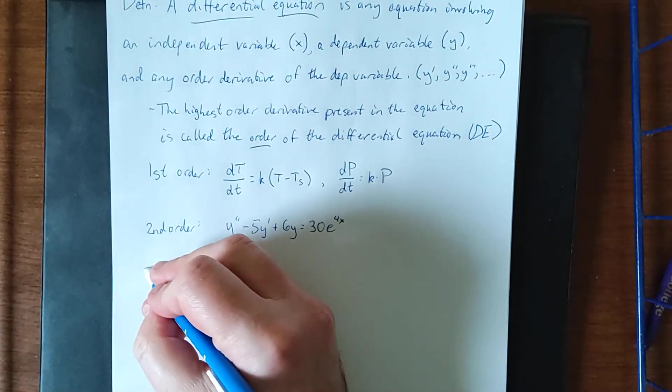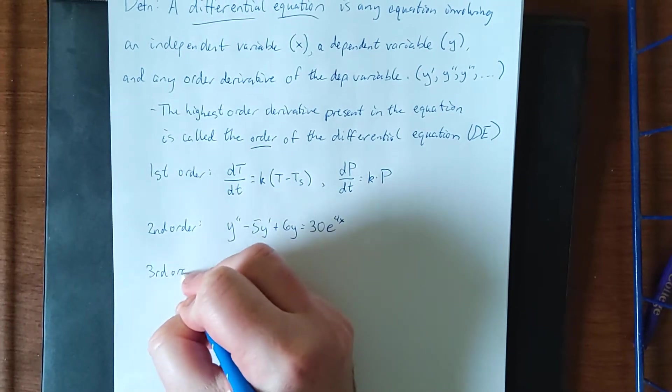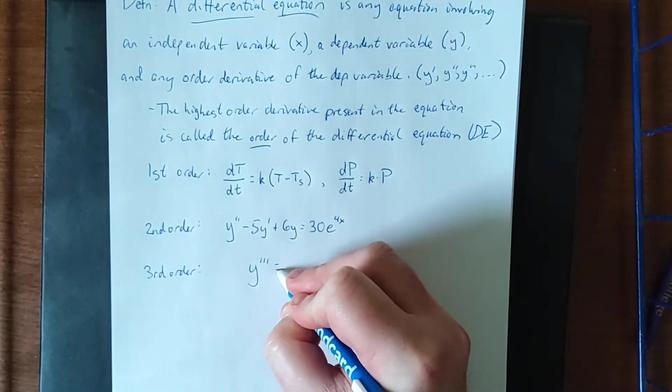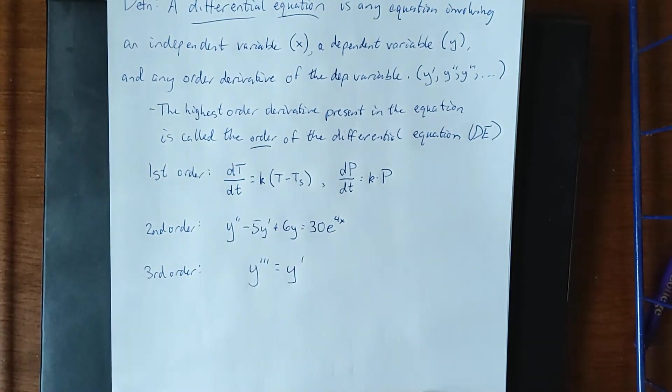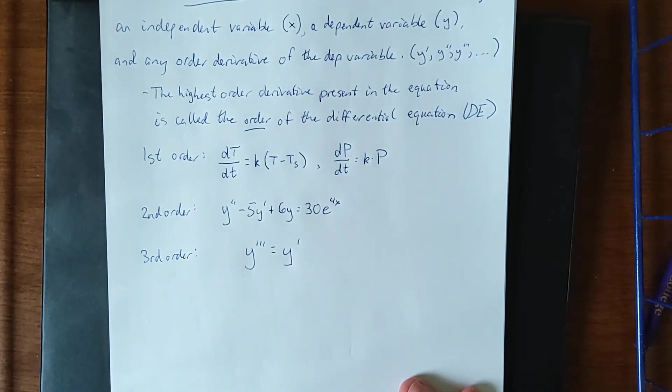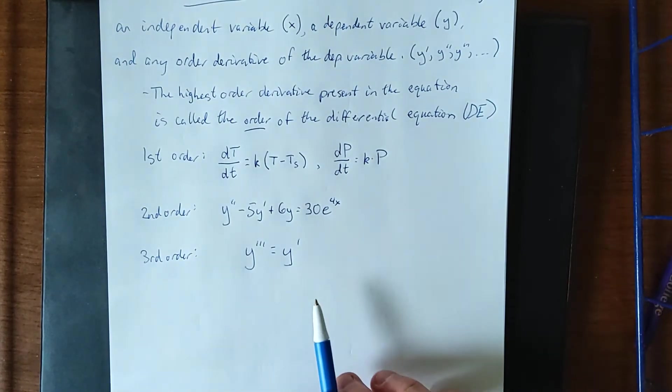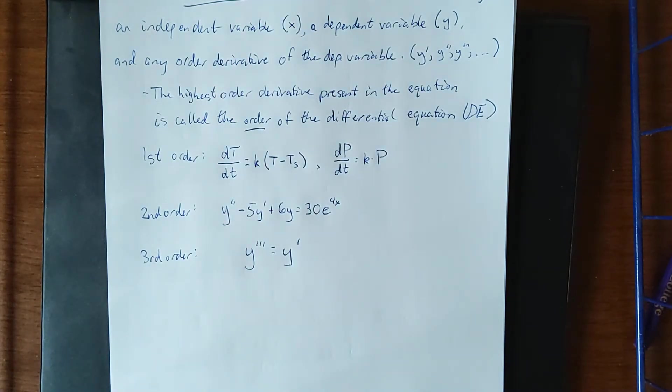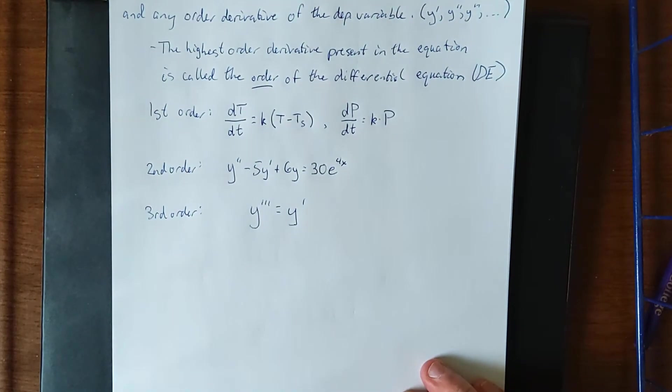Now if you wanted to go ridiculous and go with something that is a third-order differential equation, we could just do something simple like saying that the third derivative of a function is equal to the first derivative of a function. So a couple things that would satisfy that: exponentials, constant functions, exponential decays, well very specific exponential functions, I suppose.